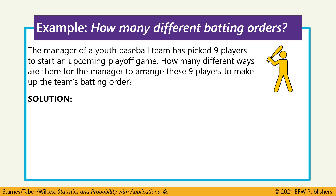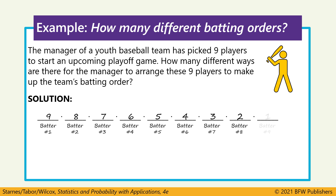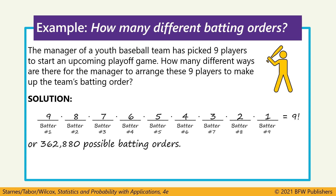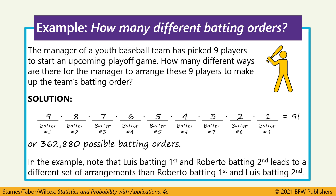The manager of a youth baseball team has picked nine players to start in an upcoming playoff game. How many different ways are there to arrange these nine players into a batting order? Just like the photos, there are nine options for the first batter, eight remaining for the second, all the way down until the last batter where there's just one remaining. So nine factorial gives us 362,880 possible batting orders. Order is important here because whether Luis bats first and Roberta bats second — or vice versa — creates different arrangements.